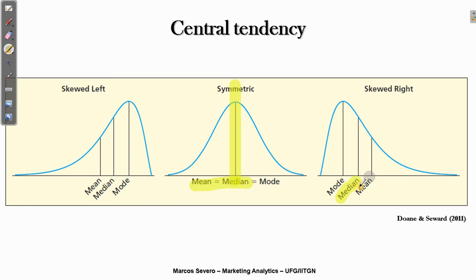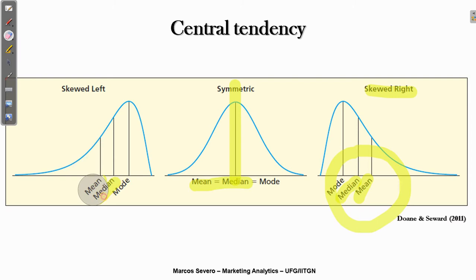Sometimes the median can be lower than the mean. In that case, you have an asymmetric distribution skewed to the right. And sometimes the median is higher than the mean — in that case, you have a left-skewed, asymmetric distribution.